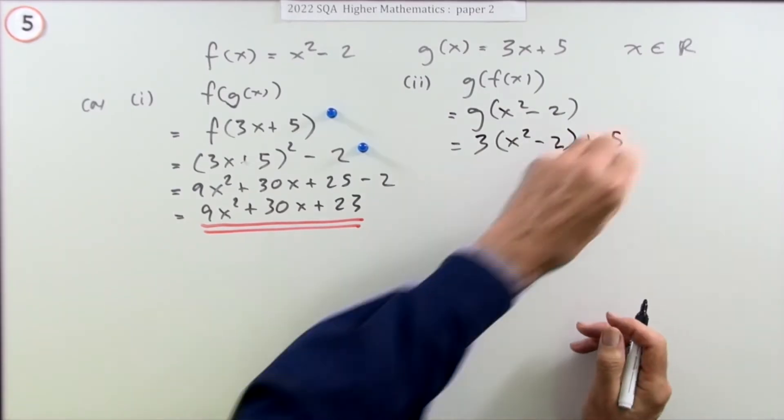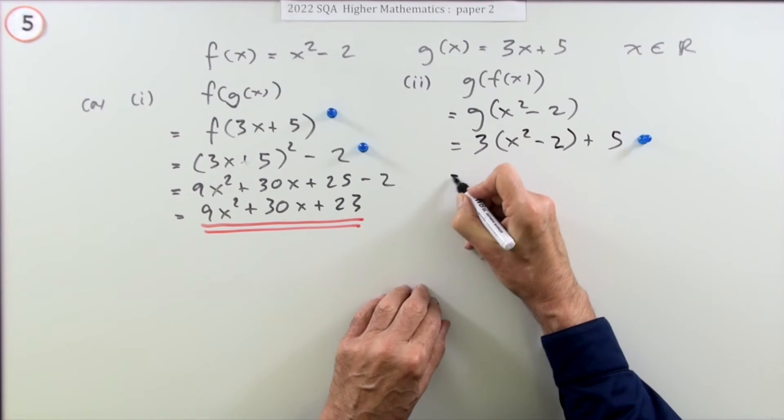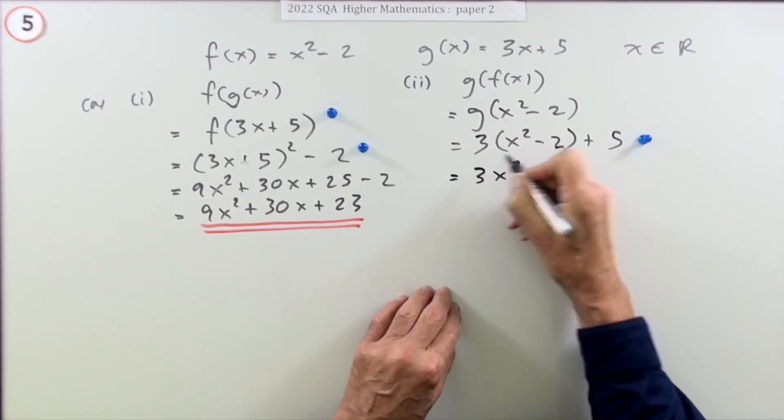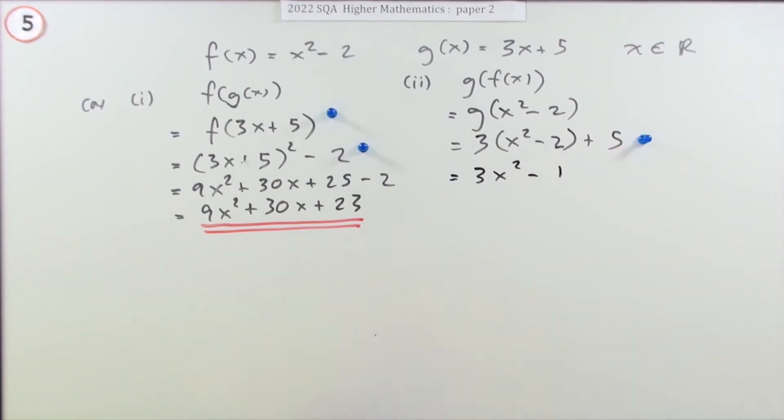So 3(x squared minus 2) plus 5. According to the marking scheme, that's sufficient for the mark. The rest is just multiplying out: 3x squared minus 6 plus 5 equals 3x squared minus 1.